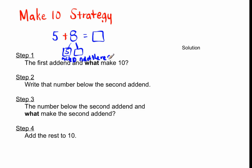Then we ask: 5 and what make 8? Step 3: 5 and 3 make 8. So then we add the rest—the 3—to 10, and we get 13.